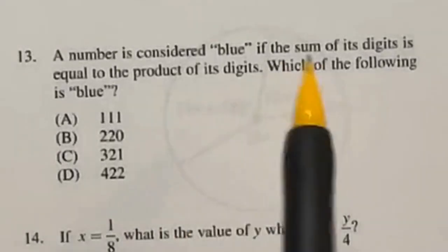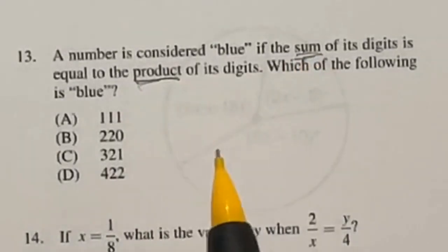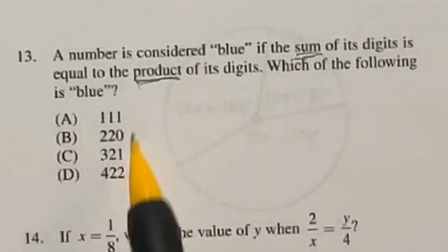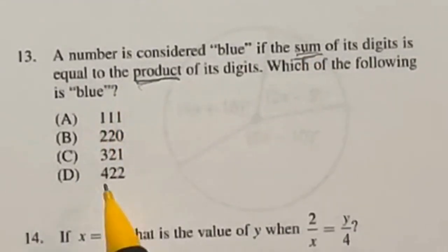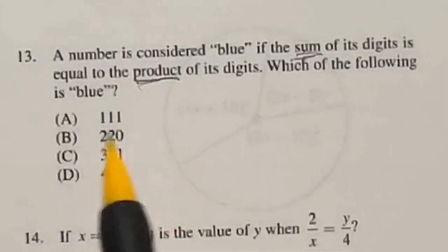For number 13, you know two things. The sum means that you're adding them all together and the product means that you're multiplying them all together. So we're supposed to find out which one of these guys down here that when you add all the digits, it would be equal to multiplying all the digits.